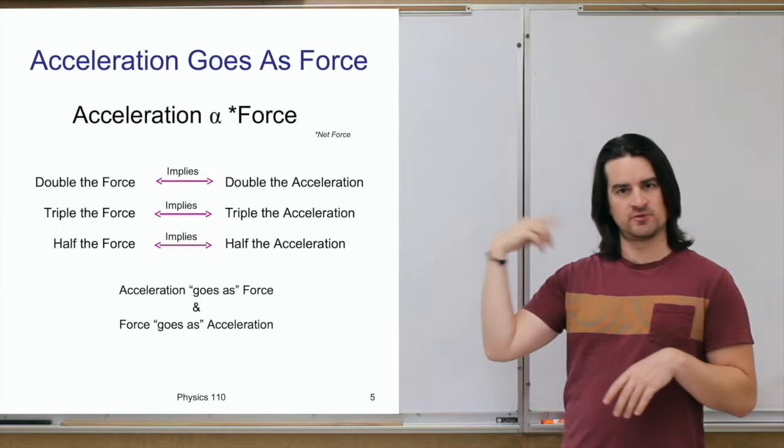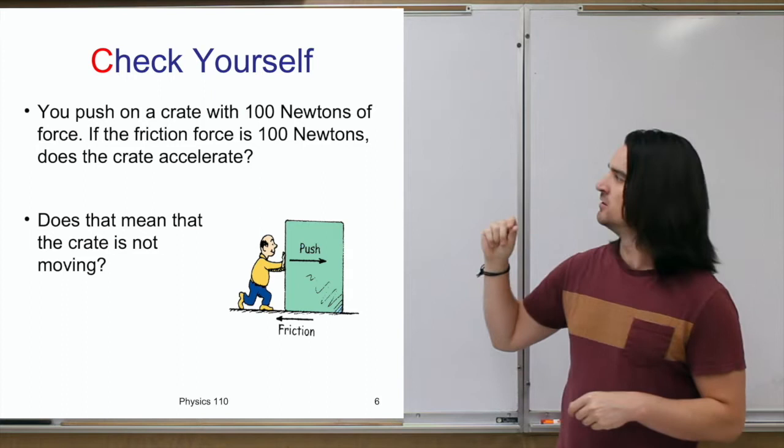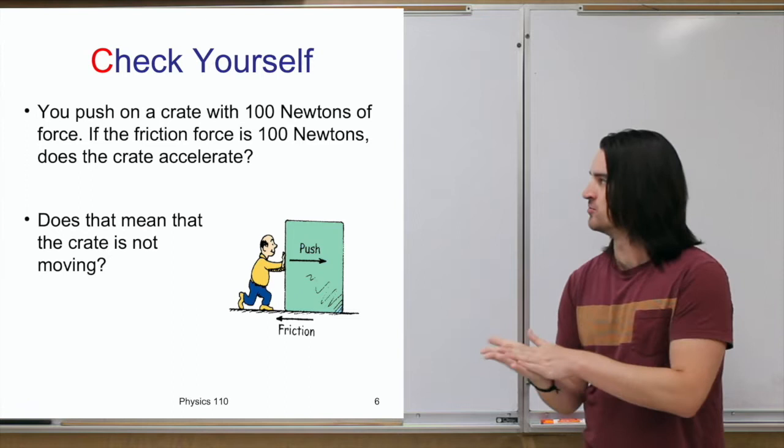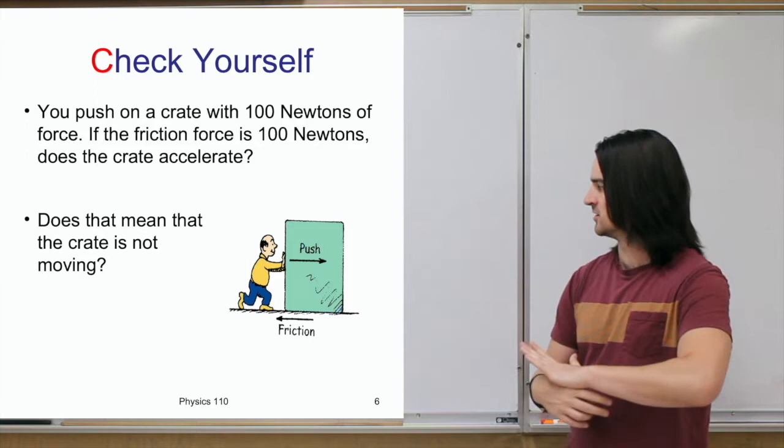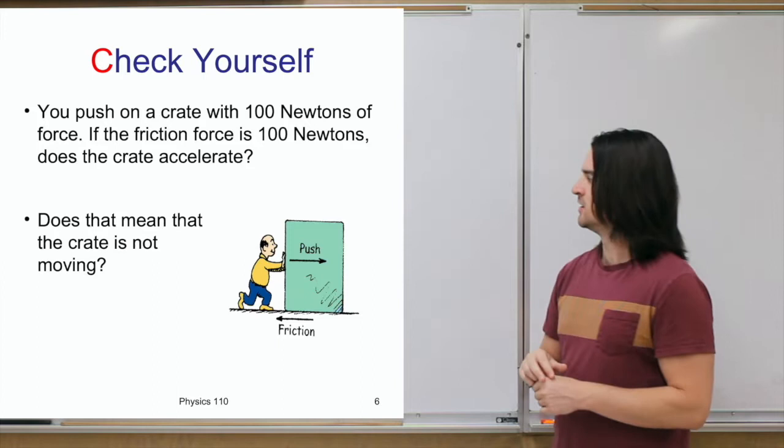Here's a quick check for yourself. Say you're pushing a crate with 100 newtons of force. If there's a force of friction between the crate and the floor of 100 newtons as well, in the opposite direction — remember, friction always pushes against the motion — does this crate accelerate? And does that also imply that the crate is not moving? Pause the video and jot down an answer.